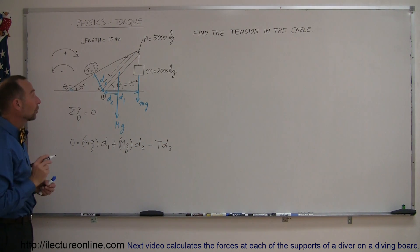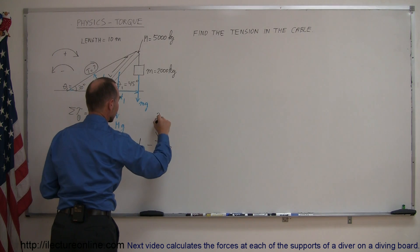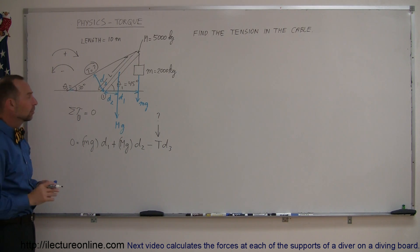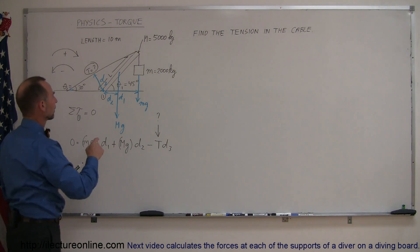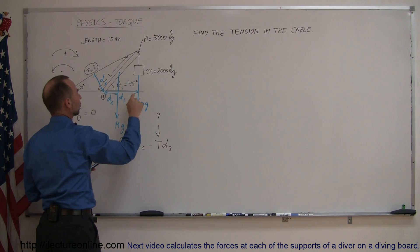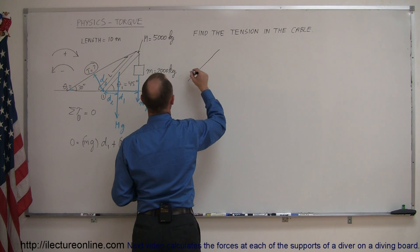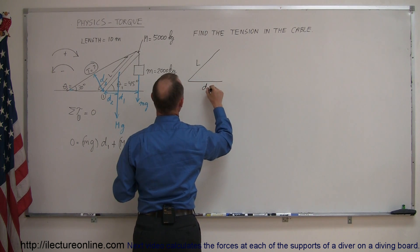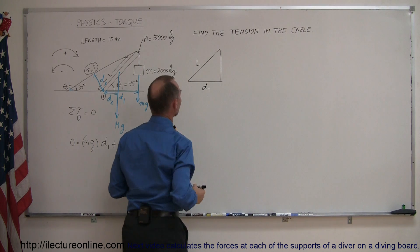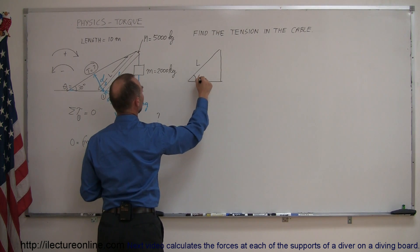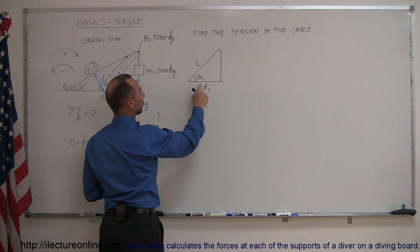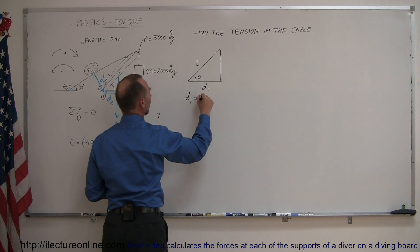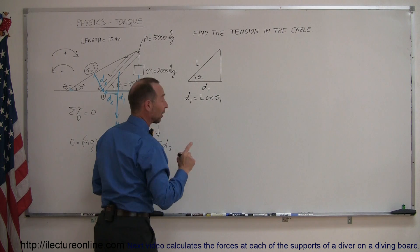What we're trying to find is the tension. To do that, we need the values for d1, d2, and d3. To find d1, I'll draw the triangle separately. The hypotenuse is the length of the beam L, and d1 is the adjacent side to angle theta_1, so d1 equals L times cosine(theta_1). For d2, the hypotenuse is L/2 since the weight acts at the center mass, and d2 equals (L/2) times cosine(theta_1) — it turns out it's the same angle theta_1.